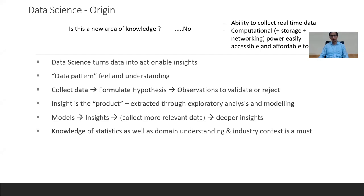Once data is collected, we formulate a hypothesis for testing. We should understand our confidence level in the features we have selected, and be able to gather additional observations and reformulate. It's really a closed control loop — we collect data, formulate a hypothesis, validate, then find out what additional data to collect, so we get closer to the final answer.